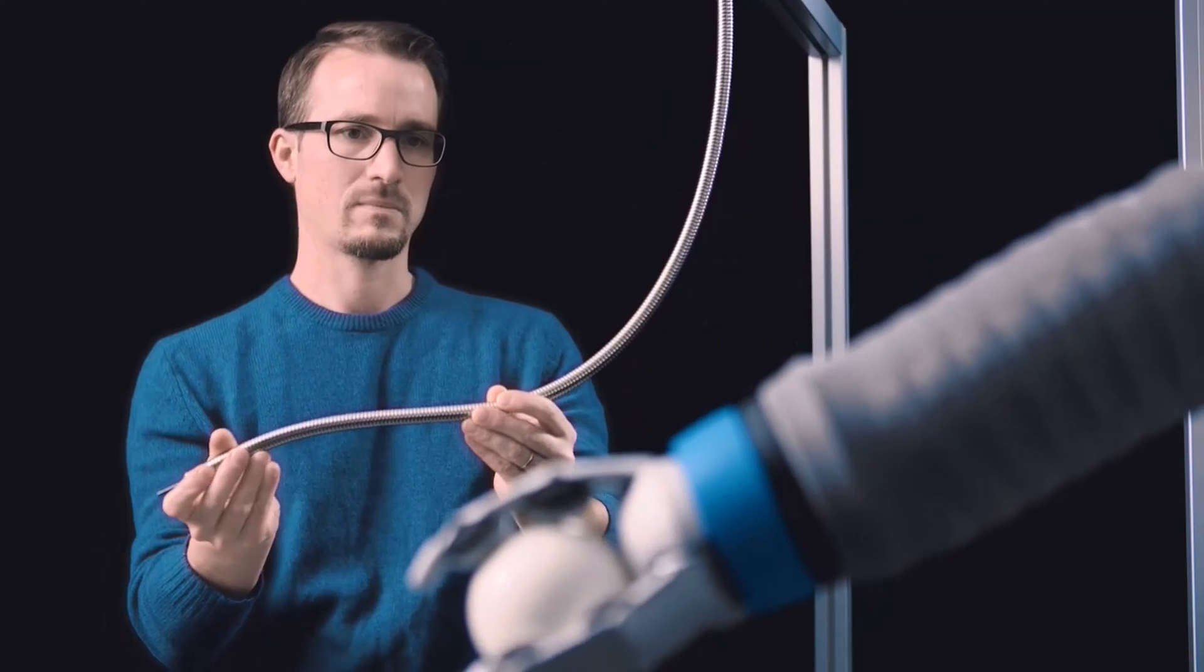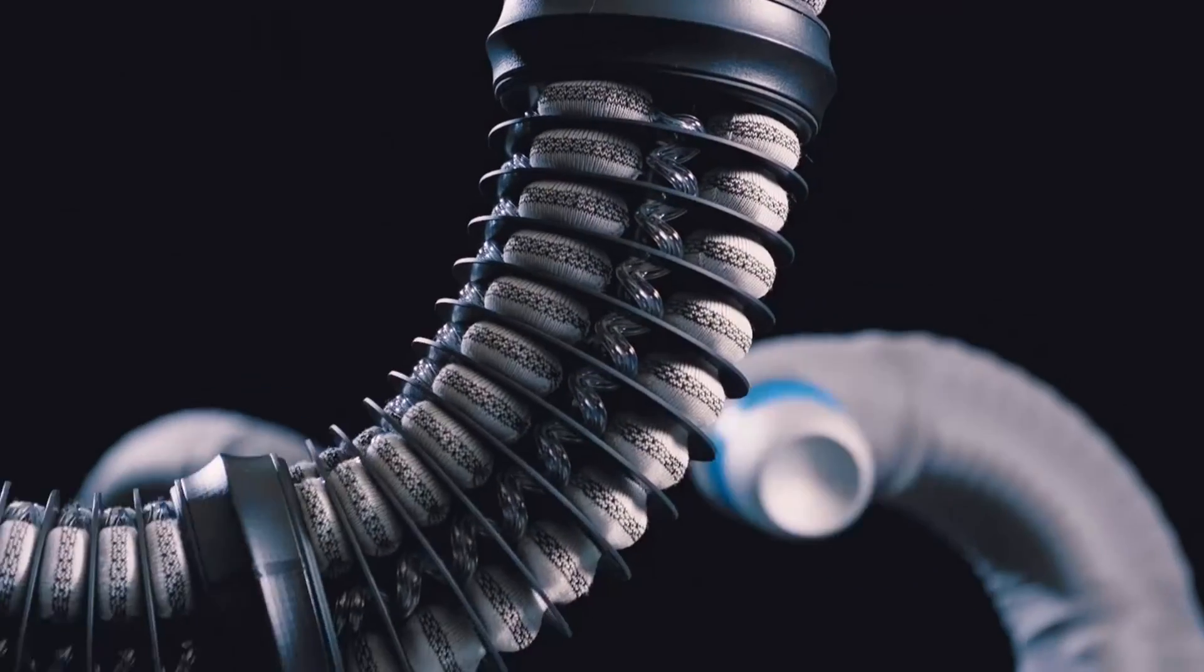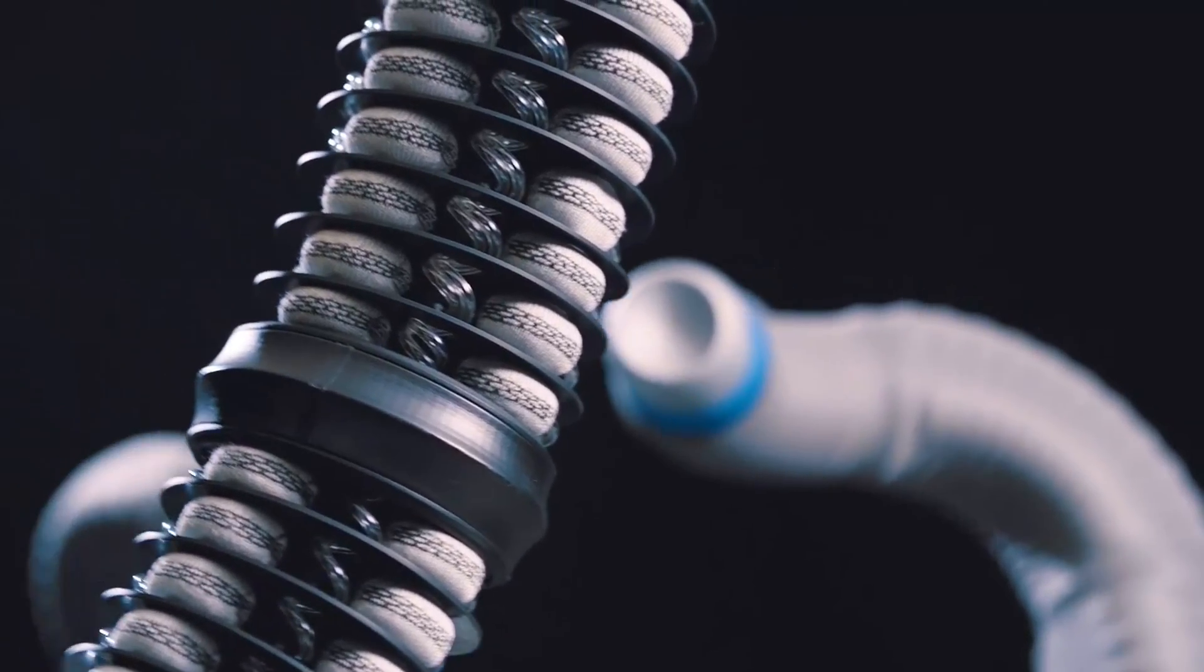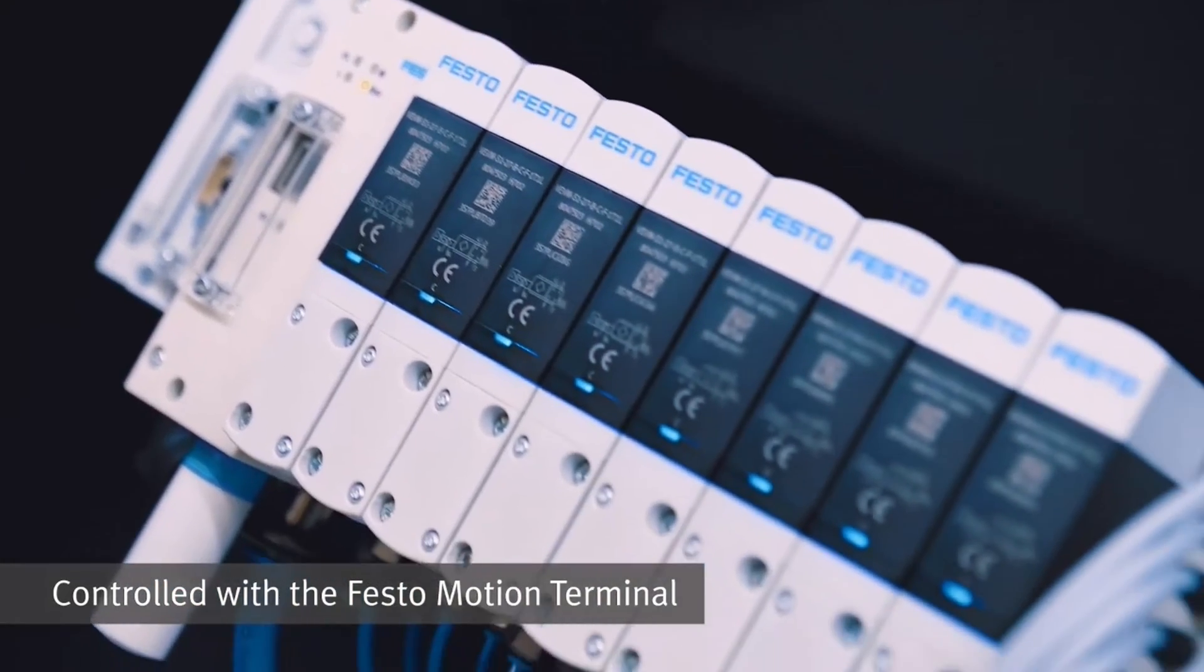An optical shape sensor along the longitudinal axis of the system records the position, shape, and interactions of the complete kinematics. The complex control and regulation of the 12 flexible bellows structures is performed by a Festo Motion Terminal VTEM.